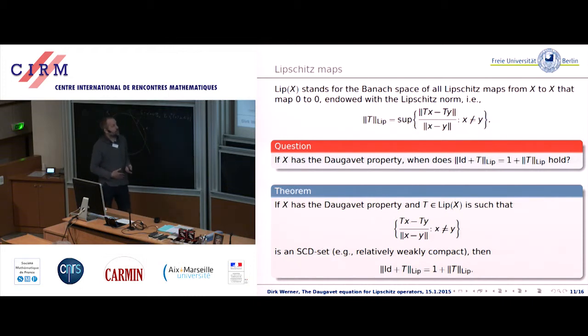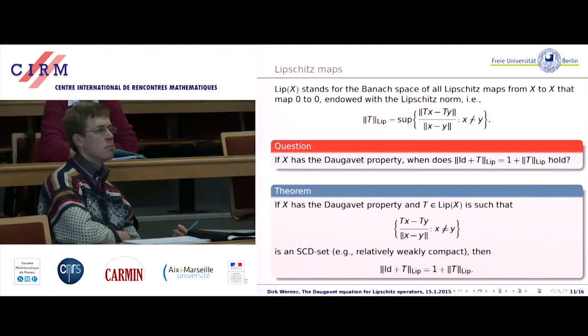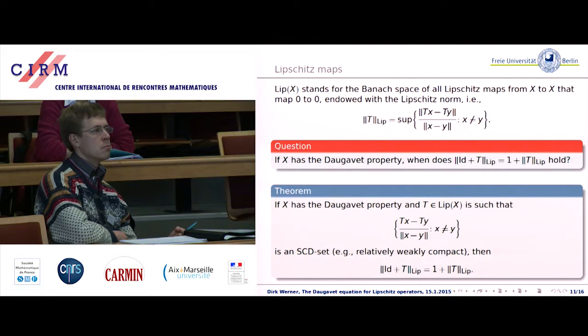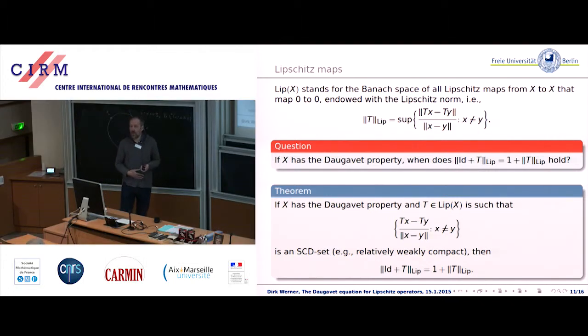Here's the result. What in the previous linear results you did is you look at the image of the unit ball and then you impose some conditions saying that it's sort of small. Here the image of the unit ball is replaced by the set you can see over here. This is in a way the set of directions that is important for a Lipschitz operator. The theorem is if this set is small in the sense of the previous page being slicely countably determined, then the Lipschitz-Daugavet equation holds. Again this is so if this set is relatively weakly compact up to a separable reduction argument. This might or might not be separable, however the SCD condition requires separability.